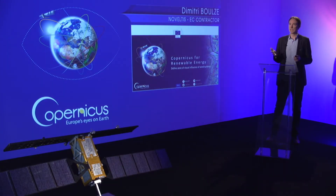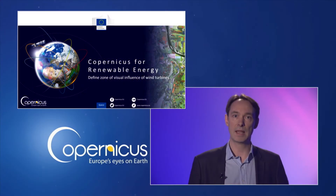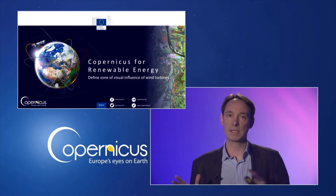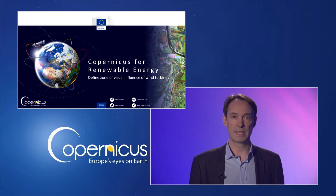These data are currently supplied by six Copernicus services dedicated to the atmosphere, climate, marine, land, emergency and security domains. In this module, I will show you how to delineate the zone of visual influence of windmills in a landscape by using data produced by the Copernicus Land Monitoring Service, known as CLMS.